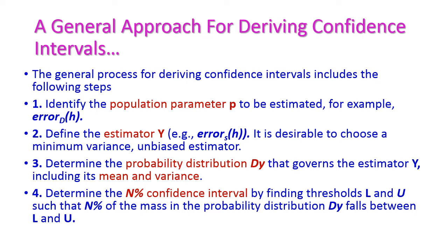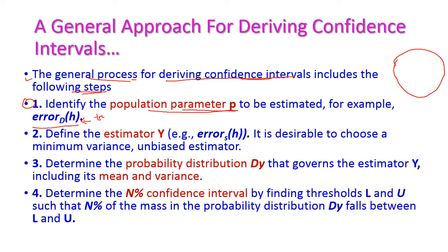The general process of deriving a confidence interval includes the following steps. We have to follow four important steps. First, we need to identify the population parameter — the entire population to be estimated; for example, error D of h, that is the true error of the entire population. Second, we need to define the estimator y, that is the sample from this entire population. We randomly select some examples and define a sample — this is error S of h, the sample error.